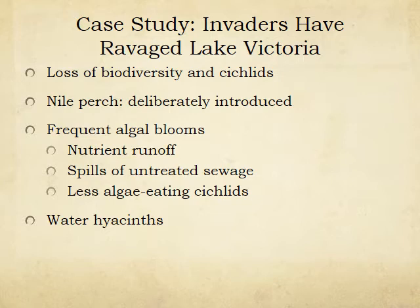Lake Victoria in Africa has experienced loss of biodiversity among ancient species of fish called cichlids. The Nile perch were deliberately introduced into this lake. Now there are frequent algal blooms because of nutrient runoff from untreated sewage, and the algae-eating cichlids are gone. These native fish used to eat all sorts of algae, but now that the Nile perch were introduced, they eat all of the native cichlids and pollution is growing. The waterways are also clogged with water hyacinths, which were introduced most likely for aesthetic reasons.